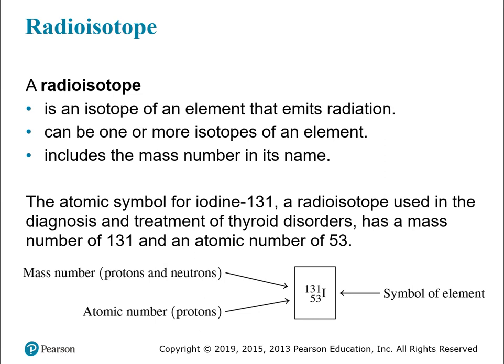A radioisotope is an isotope of an element that emits radiation. You can have more than one radioisotope of a single element. When describing a radioisotope, include the mass number in its name — just like the atomic symbols from Chapter 4. One example is iodine-131, used to diagnose and treat thyroid disorders. You write it with the symbol I, with 131 as the mass number and the atomic number below.